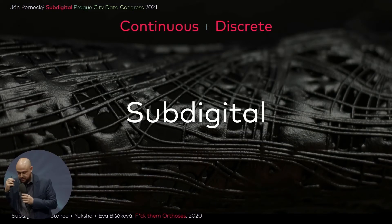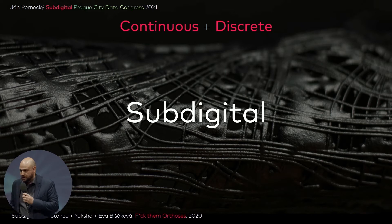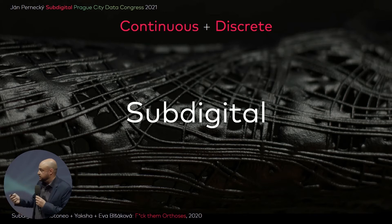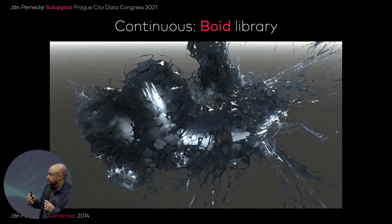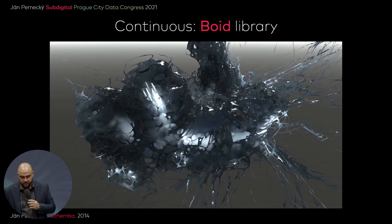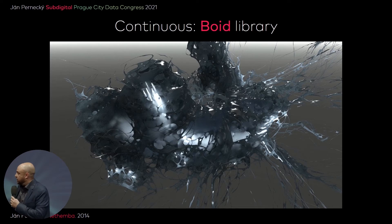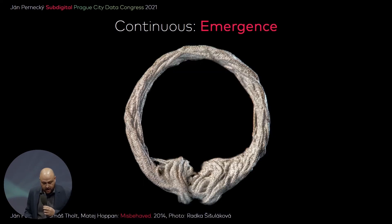I'm mostly going to show pictures of our own work at the studio Sub Digital. We are trying to contribute to both fields of computational design — continuous and discrete. We started with continuous because we were amazed by the phenomenon of emergence. This is also my work as a toolmaker: a case study for my implementation of Craig Reynolds' boid algorithm for architects — a simulation of a flock or swarm for design purposes, which I did in 2014.